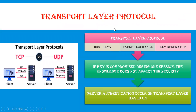Next, moving into the Transport Layer Protocol in detail — the transport layer protocol has some parameters like host keys, packet exchange, and key generation. We already know that the transport layer protocol has TCP and UDP as protocols wherein these parameters are used. What the host key does is provide server authentication at the transport layer, based on how the server is providing the key pair — whether private or public keys.